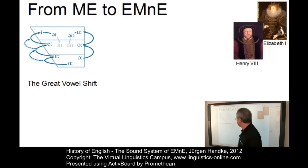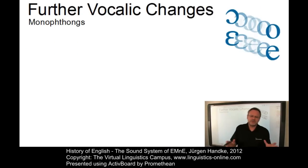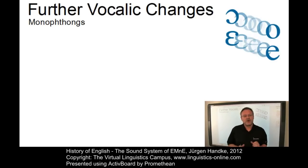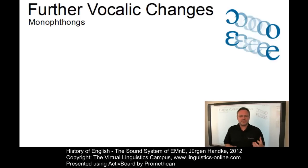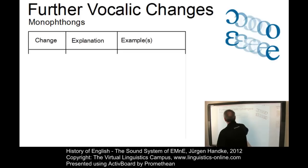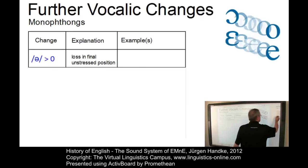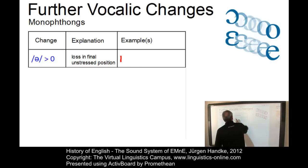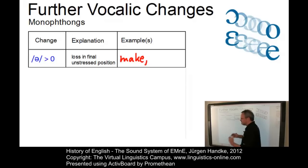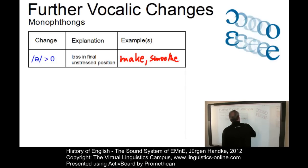Apart from the Great Vowel Shift, Early Modern English saw no sweeping systematic changes in the Middle English vowels. Nevertheless, all short vowels were somehow involved in some changes. The first major change is the loss of schwa in final unstressed positions. Typical examples are words such as 'mark' — formerly 'marke' — or 'smother' became 'smoth' and later 'smooth'.